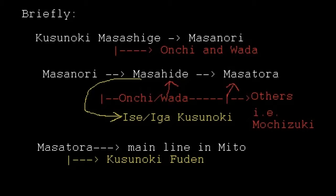That auxiliary line also branches off in the direction of a family called Mochizuki, among a handful of other families. The Mochizuki is important because they are one of the chief families propagating and writing texts about the Shotoku Jengundin between 1550 and 1575. Since they are a key family of the Shotoku Jengundin, we also see their connection with this Onchi-Wada auxiliary line.